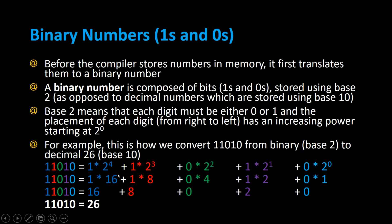And you can see that if you multiply them by the values, you get 16 plus 8 plus 0 plus 2 plus 0, which gives you 26. And that's how you basically convert binary to decimal.